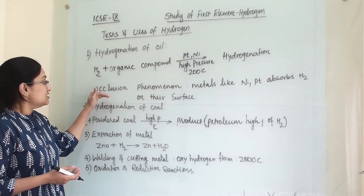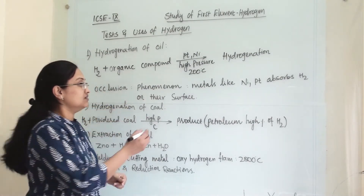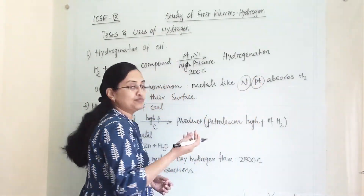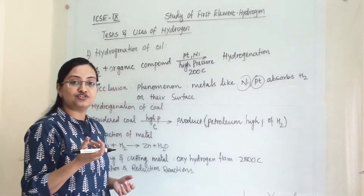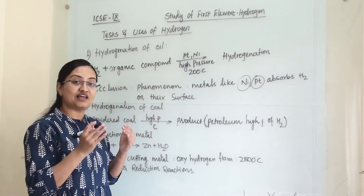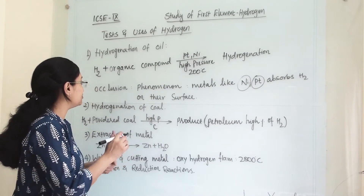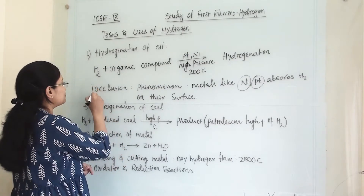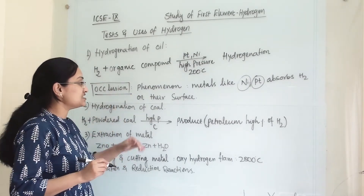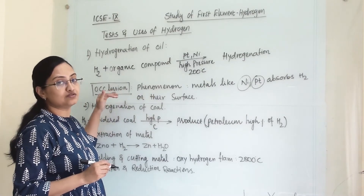Some metals like nickel and platinum absorb hydrogen gas — a large amount of hydrogen gas is absorbed on their surface. This phenomenon is known as occlusion.